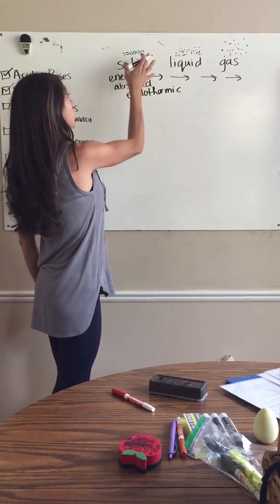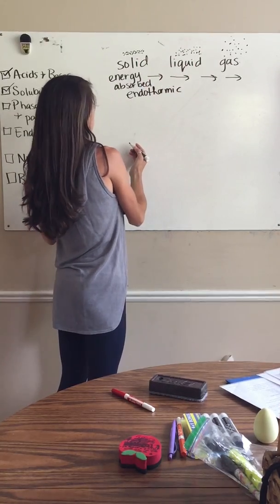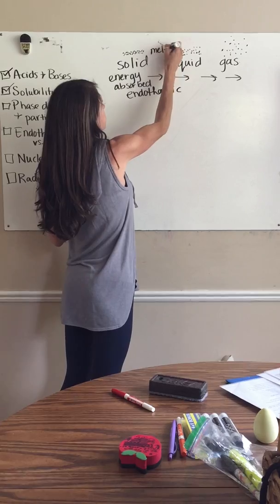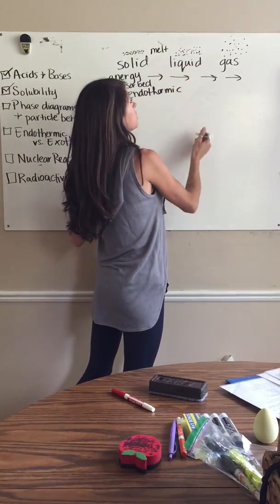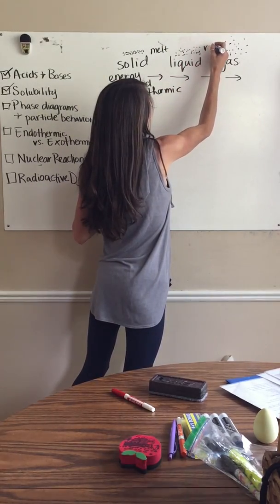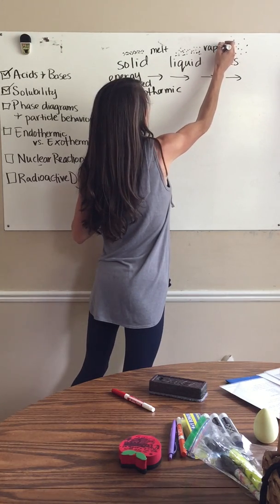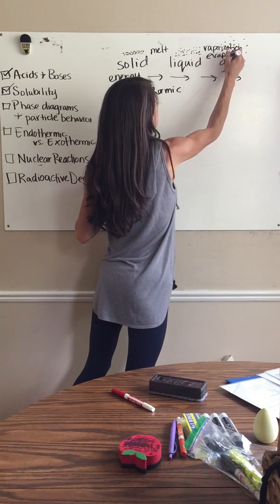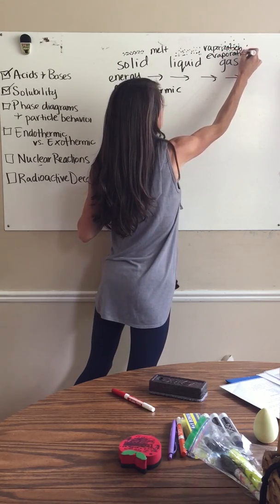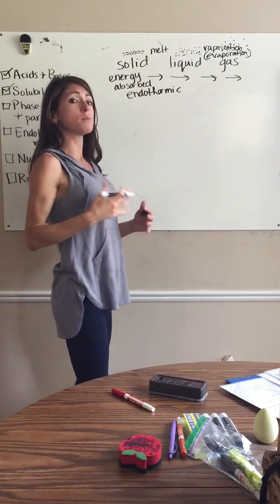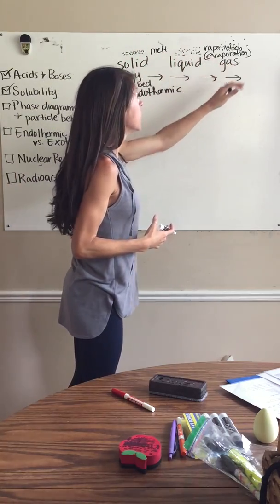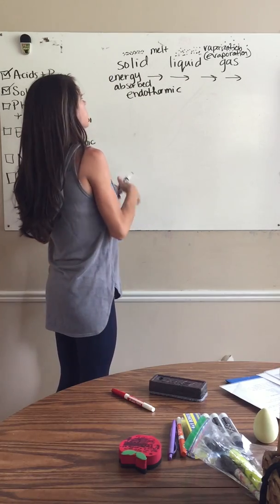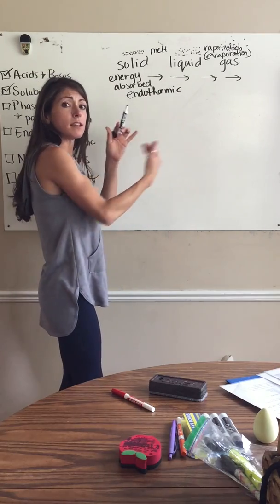As we go from a solid to a liquid to a gas: when you go from a solid to a liquid, this is where we melt. When we go from a liquid to a gas, this is when something vaporizes — vaporization, also called evaporation, same thing. Basically the same process where the particles, those atoms, those molecules, are gathering up energy and going through an endothermic change.